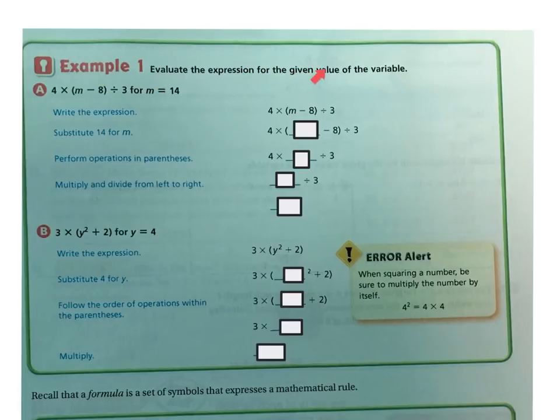Example 1. Evaluate the expression for the given value of the variable. We have 4 times, and then in parentheses M minus 8, divided by 3. For the M, we're going to put in 14. We write the expression: 4 times, M minus 8, divided by 3. We plug in the 14. We do parentheses first: 14 minus 8 is 6. So now I have 4 times 6 divided by 3. We multiply and divide from left to right: 4 times 6 is 24. Then 24 divided by 3 is 8.